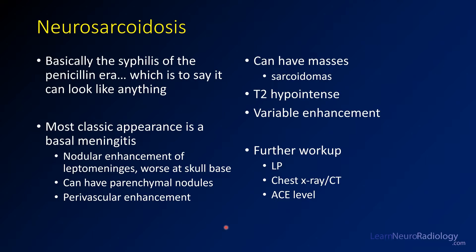This patient happened to have sarcoidosis. Sarcoid, especially in neuroradiology, is almost a syphilis-like entity which can look like a lot of different things. The classic appearance is a basal meningitis, where you have nodular thickening and leptomeninges that are worse in the basal cisterns and at the skull base. You can get parenchymal nodules and perivascular enhancement. Sarcoidomas are sarcoid-related masses that are usually T2 hypointense and can have variable enhancement. The workup is to do an LP, get a chest X-ray or chest CT to look for nodules and hila, which are frequently seen with sarcoidosis. A serum ACE level can also point you towards sarcoidosis.